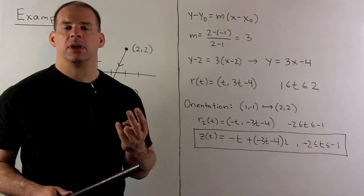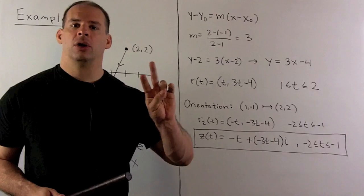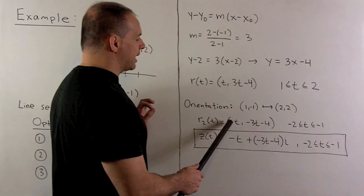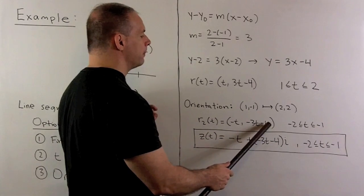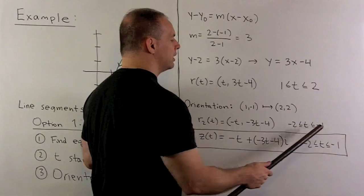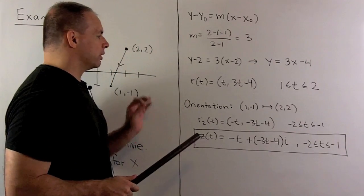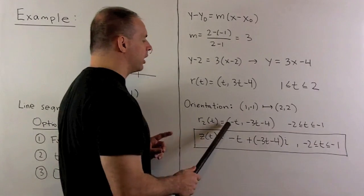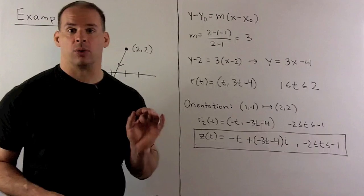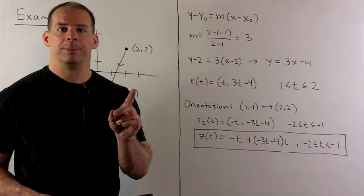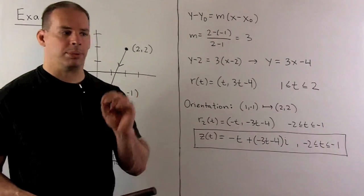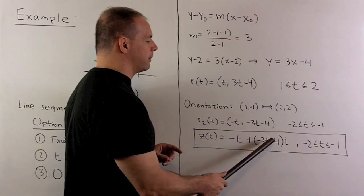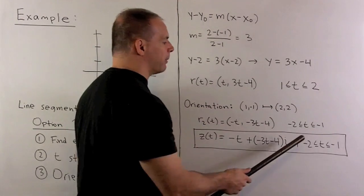So, the orientation is in the wrong way. So, we're just going to replace t with minus t, and then put minus signs on our interval numbers. So, that's going to give me minus t comma minus 3t minus 4. Then, we're going to have t going from minus 2 to minus 1. So, we can recheck. If I put a minus 2 in here, I have 2 comma 2. If I put minus 1 in here, I have 1 comma minus 1. So, that's going in the right direction. Finally, we go to the complex plane. So, I have z of t equal to minus t plus then parentheses minus 3t minus 4 times i. And then, we're going from minus 2 to minus 1 in t.